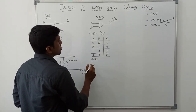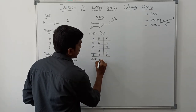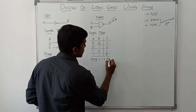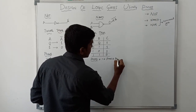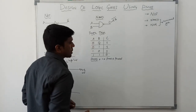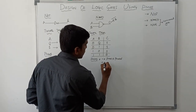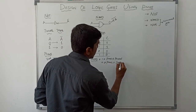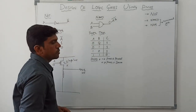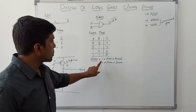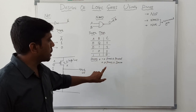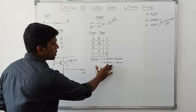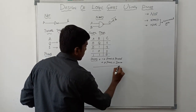Now I am drawing the PMOS structure. In the Boolean expression, when the dot operator is present, the PMOS transistors are connected in parallel. When the plus operator is present, the PMOS transistors are connected in series. This is the rule of PMOS structure. Using these rules, I am going to draw the circuit structure.